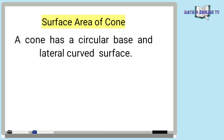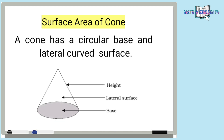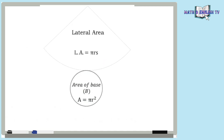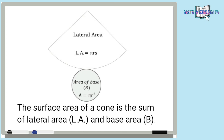Next, surface area of cone. A cone has a circular base and lateral curved surface. Ang cone ay mayroong bilog na base o circle at ang lateral surface ay curve. Kapag tinanggal natin sa pagkakabuo yung cone, ang makikita natin ay net of cone — ito yung nasa kanan. Ang net ng cone ay isang circle at lateral surface na nakakurba yung hugis. The surface area of a cone is the sum of lateral area and base area. Kukunin natin yung area ng bawat shape at ipa-plus natin, at yung answer ay ang surface area ng cone.